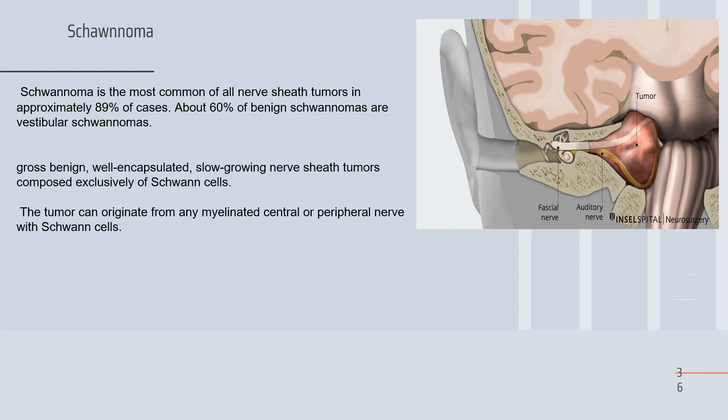Schwann cells cover the peripheral nervous system and peripheral nerves. Schwannoma is a totally benign, encapsulated, compressing, non-infiltrating tumor with no areas of hemorrhage or necrosis, and low cellular atypia — it closely resembles the normal Schwann cell, meaning it is highly differentiated.